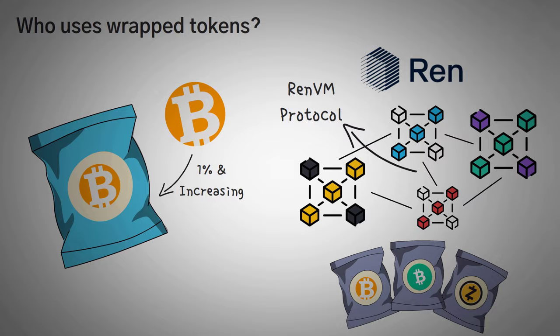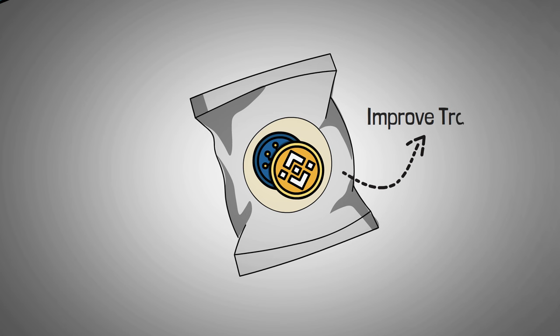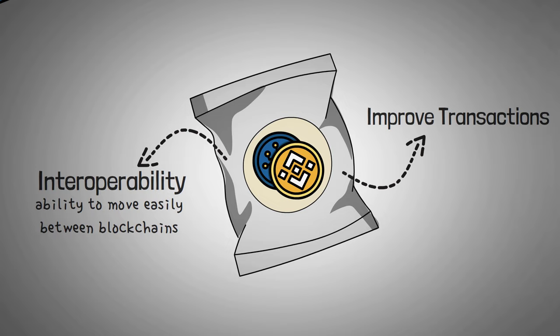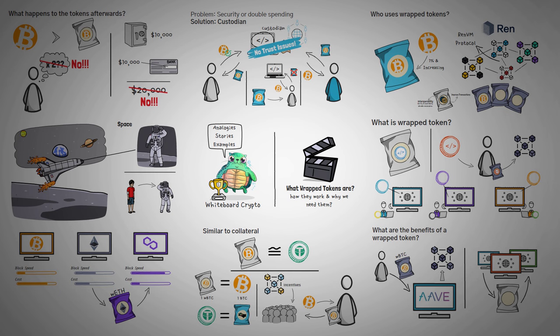Summing it all up, wrapped tokens may seem like a simple idea that just let people improve how they make transactions, but the problem that it solves is much bigger. Interoperability, or the ability to easily move between blockchains, is becoming a very important and recurring problem to solve as the entire DeFi landscape expands. Whether the eventual solution to this problem is wrapped tokens, or maybe something else, wrapped tokens are certainly a viable solution that is only becoming more popular.